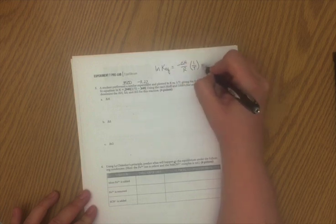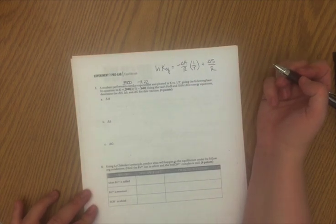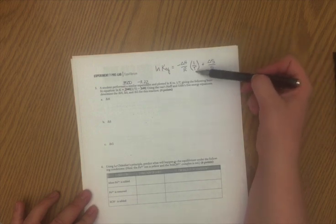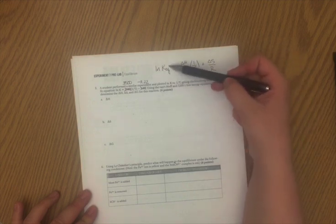The Van't Hoff equation is ln K equals negative ΔH over R times 1 over T plus ΔS over R. Now this is conveniently organized in a sort of Y equals MX plus B plot.